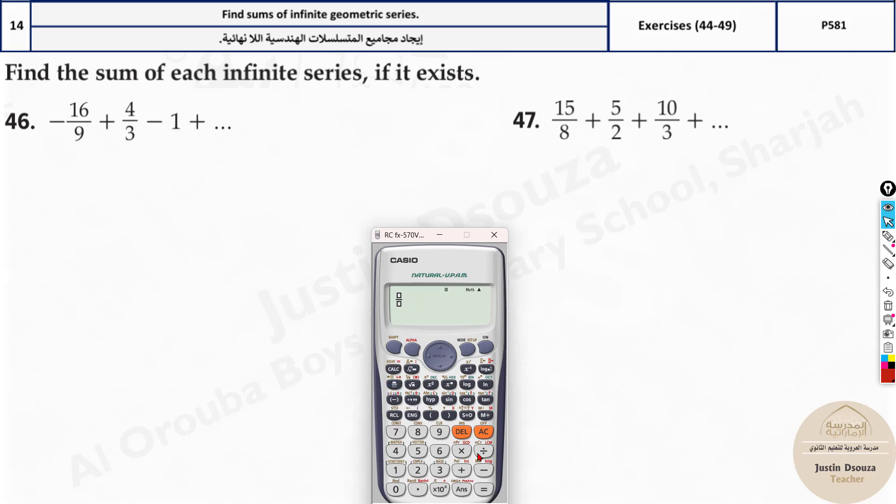That is over here minus 16 divided by 9, and over here 1 minus. I can use the answer because the r value is saved over there. The answer is negative 64 by 63. Similarly, you can do this over here. It's 2.5. I think so. Yeah, there is no sum. Why?